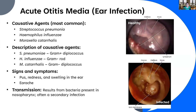Now let's talk about ear infections. The proper diagnosis is acute otitis media, meaning inflammation of the middle or inner ear. The three most common bacteria involved are Streptococcus pneumoniae, Haemophilus influenzae, and Moraxella catarrhalis. Any bacteria can cause this if it gets in the right place in abundance, but these are the three we most commonly find.